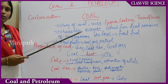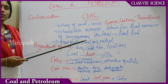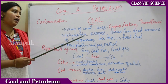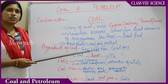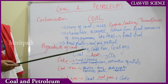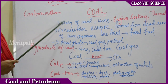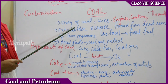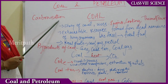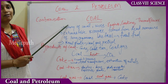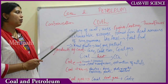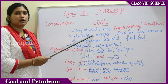Millions of years ago there were many forests and wetlands. Due to natural disasters like floods, these got buried under the soil, and due to high pressure and temperatures, the natural vegetation turned into coal. Coal is mainly made up of carbon. The process of raw vegetation converting into coal due to high pressure and temperature is called carbonization.